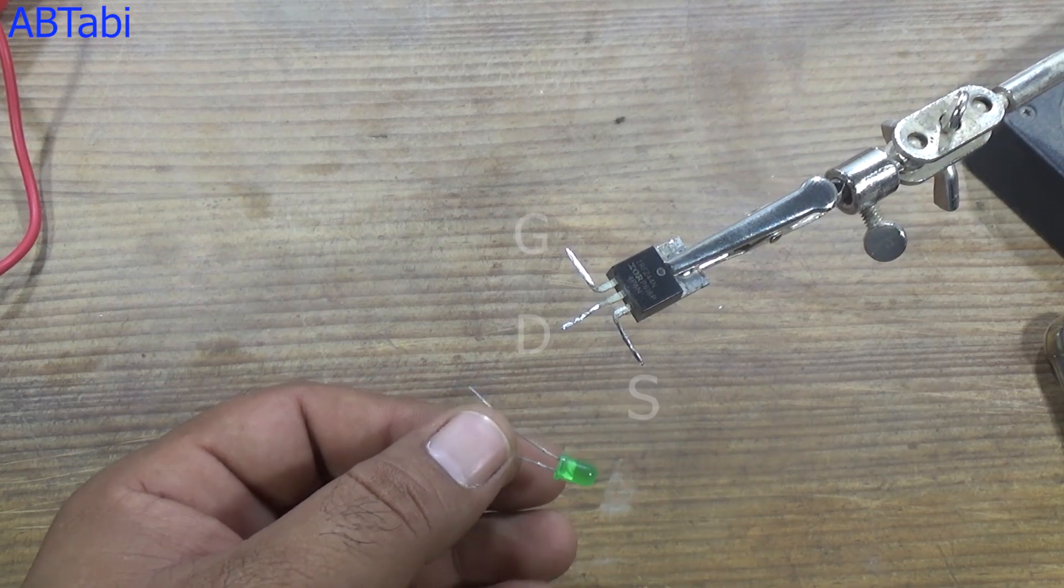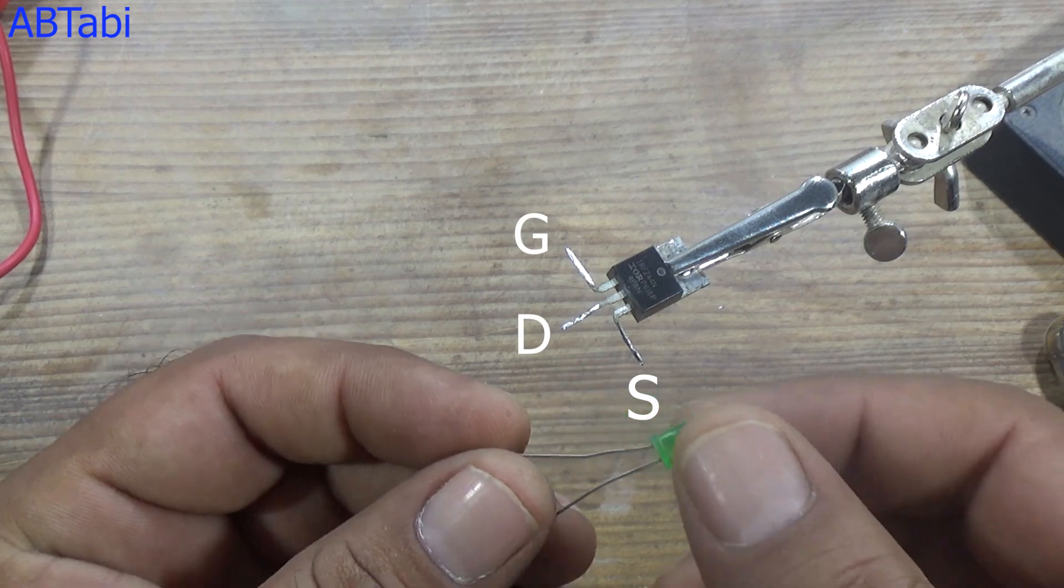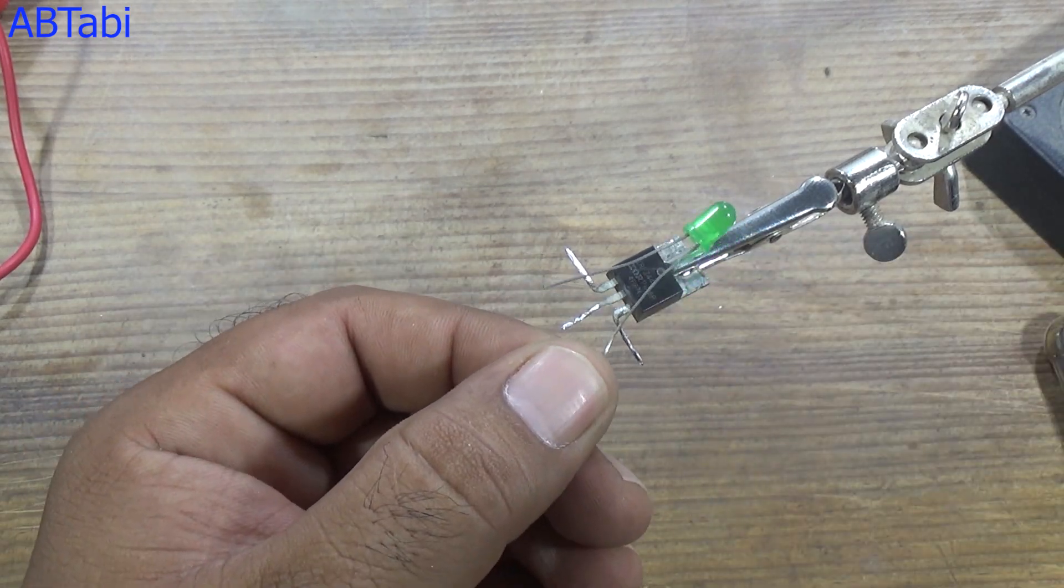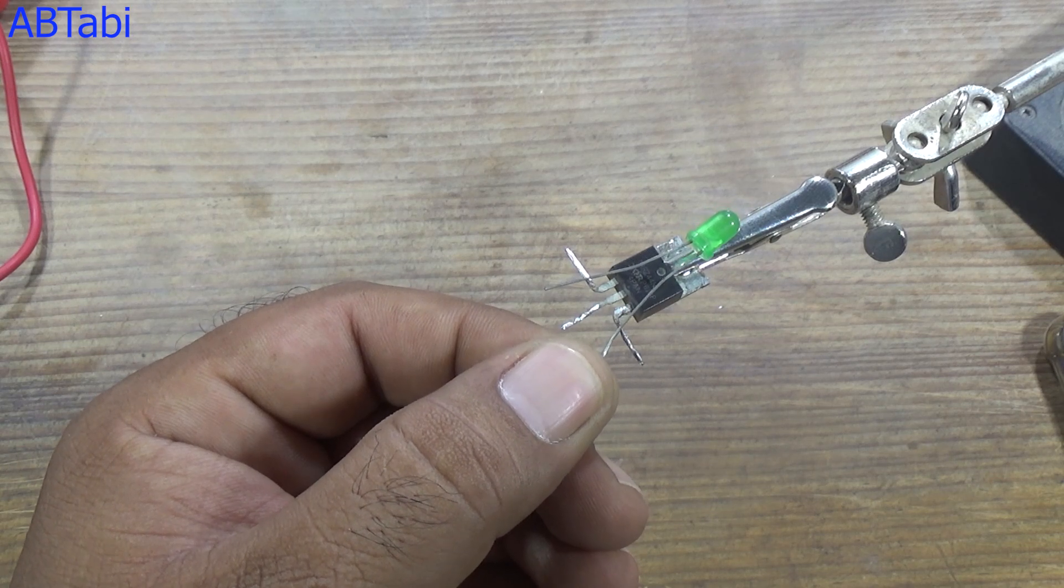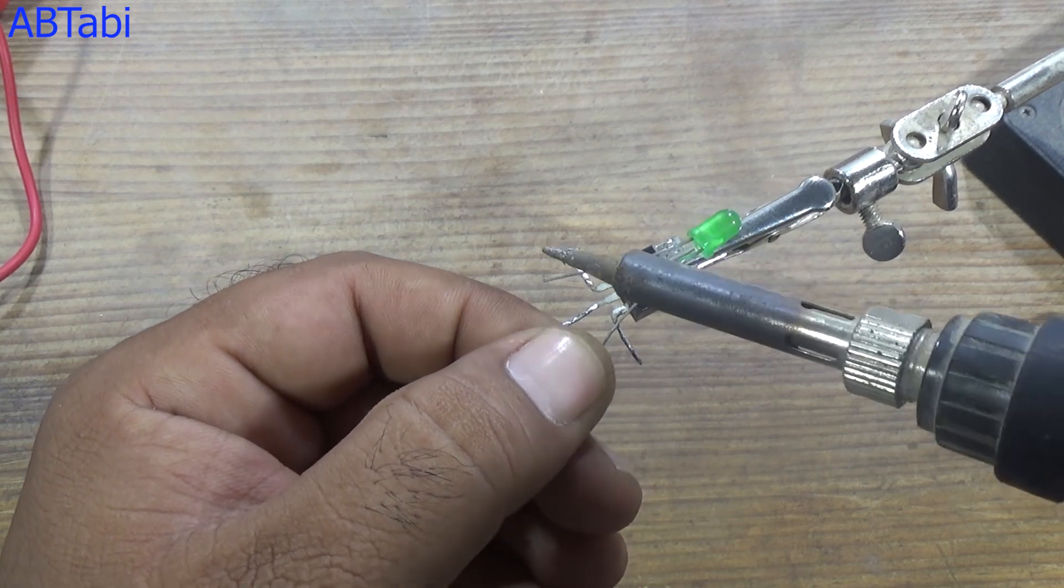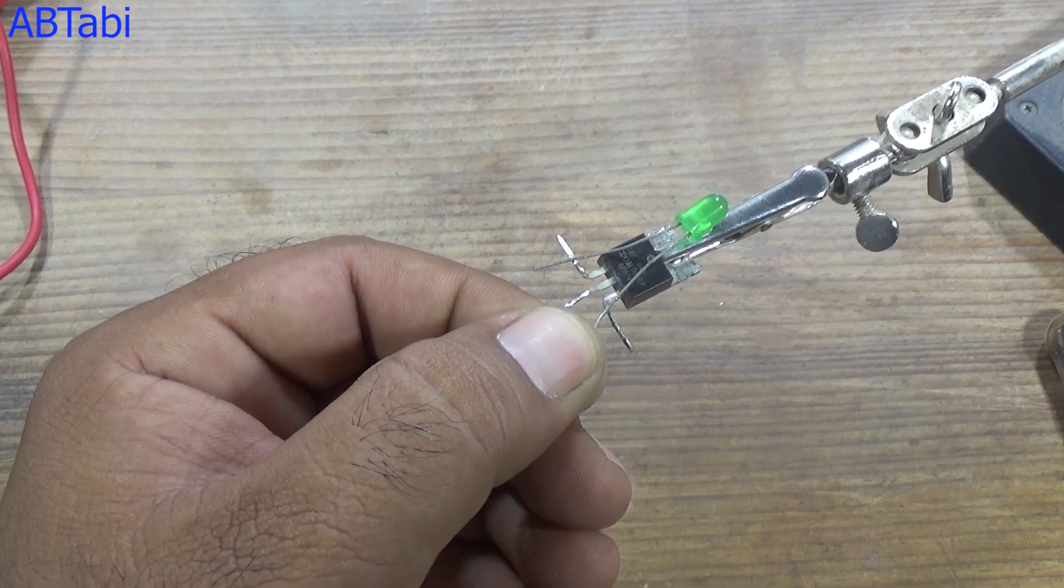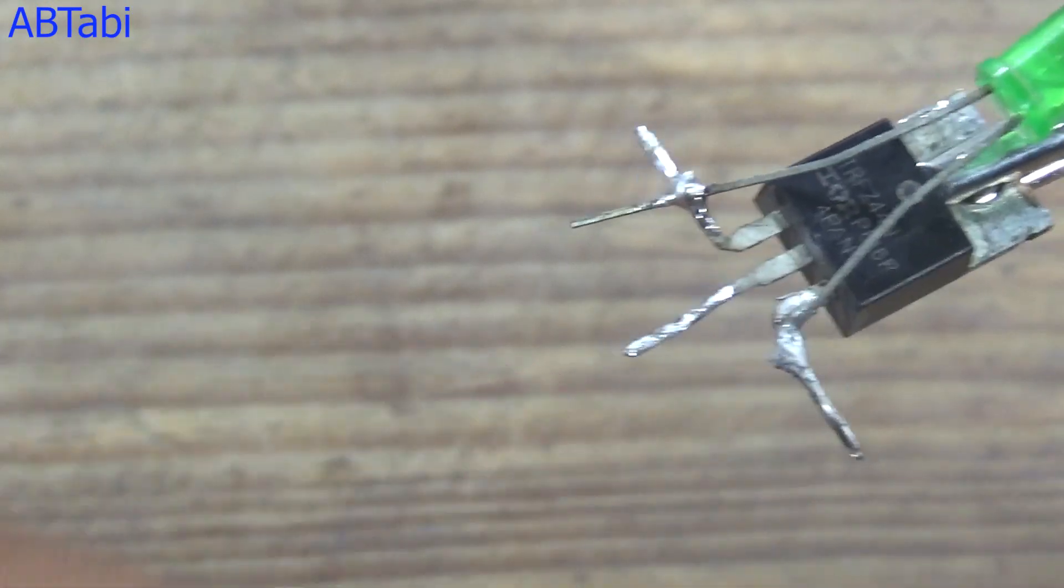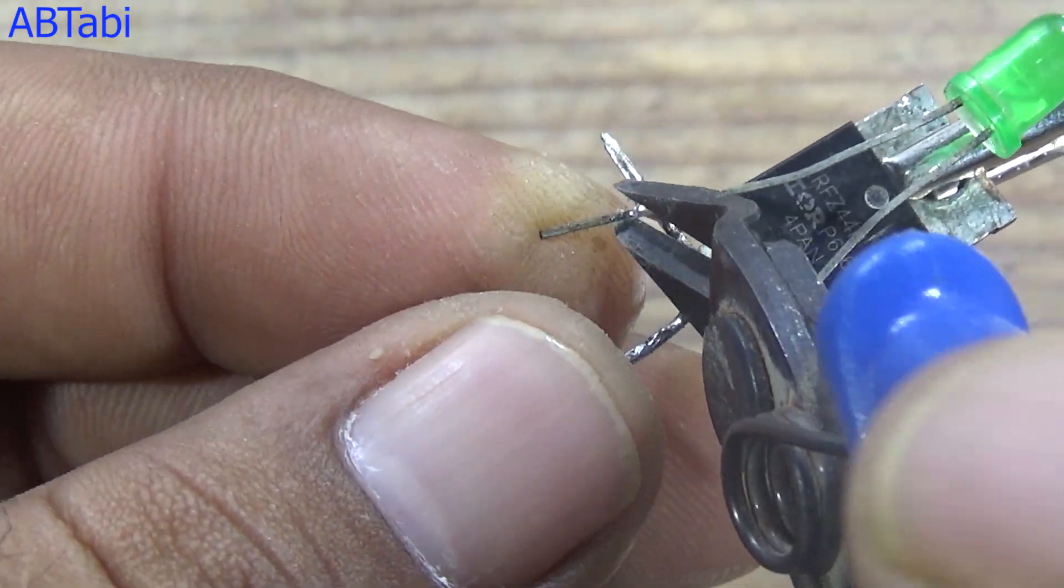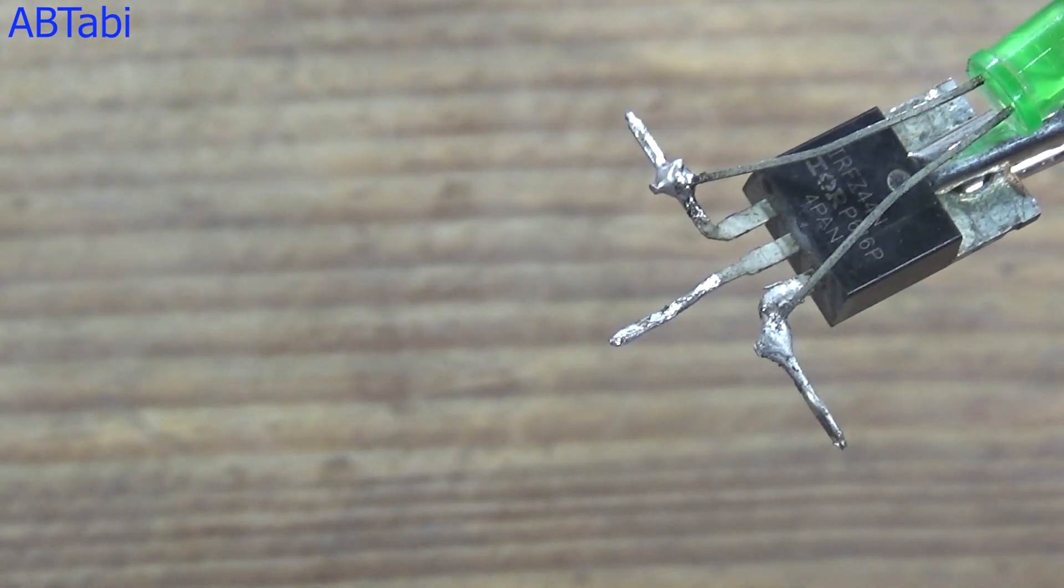Take any N-channel MOSFET. I am using Z44 N-channel MOSFET. You can use any other N-channel MOSFET to complete this circuit. In this circuit, LED cathode pin connects with MOSFET gate pin and LED anode pin connects with the MOSFET source pin.